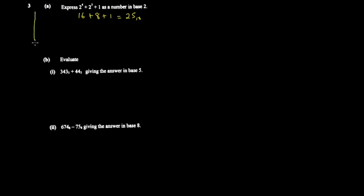After getting 25, you use what's called a T-diagram. A T-diagram is how we convert from base 10 to any number base. Here we're converting to base 2, so you keep dividing by 2. You get 1 remainder 1, so you collect the remainders.